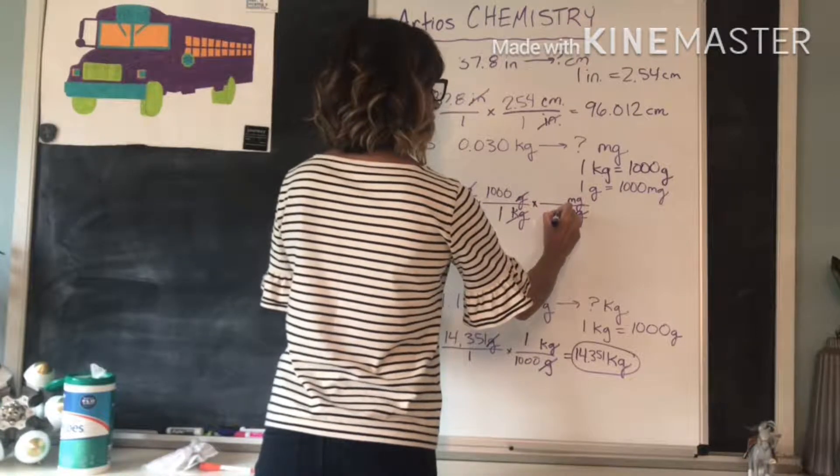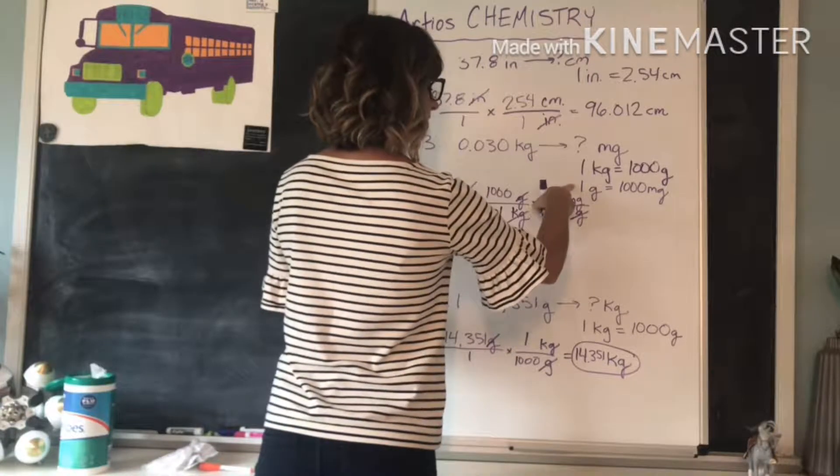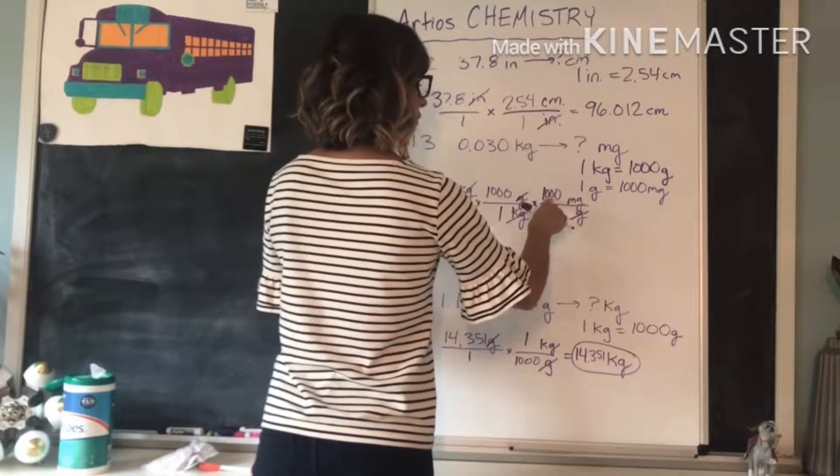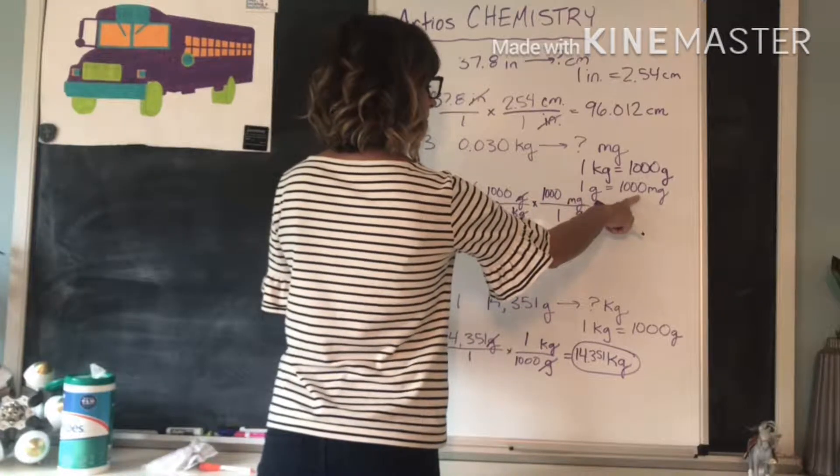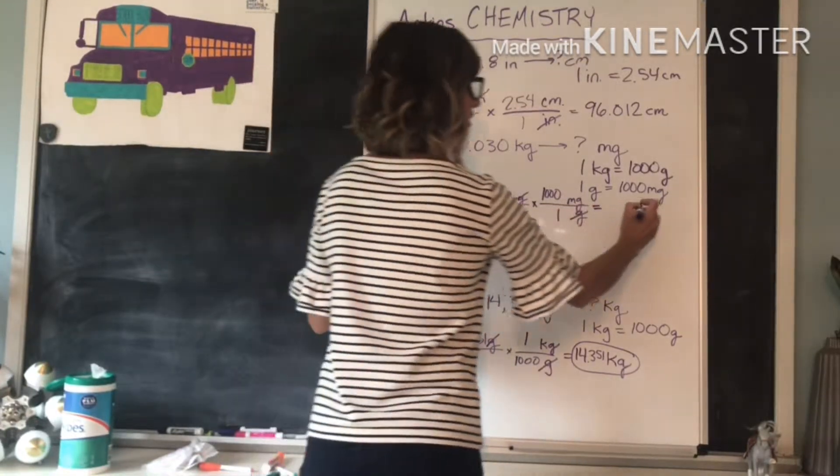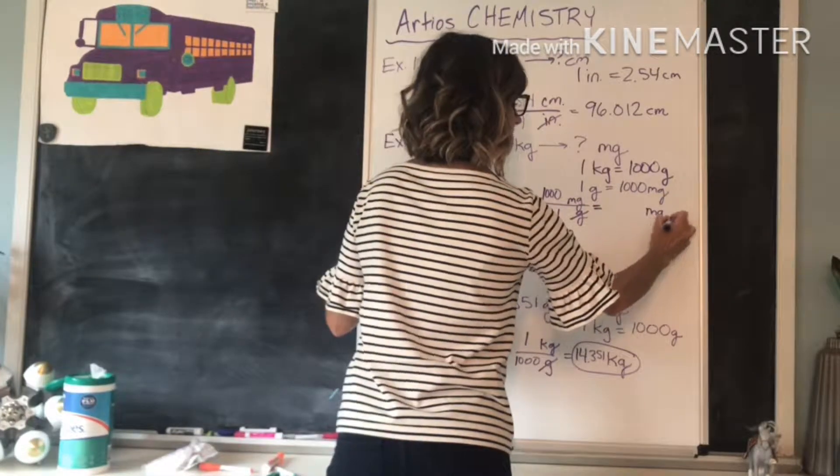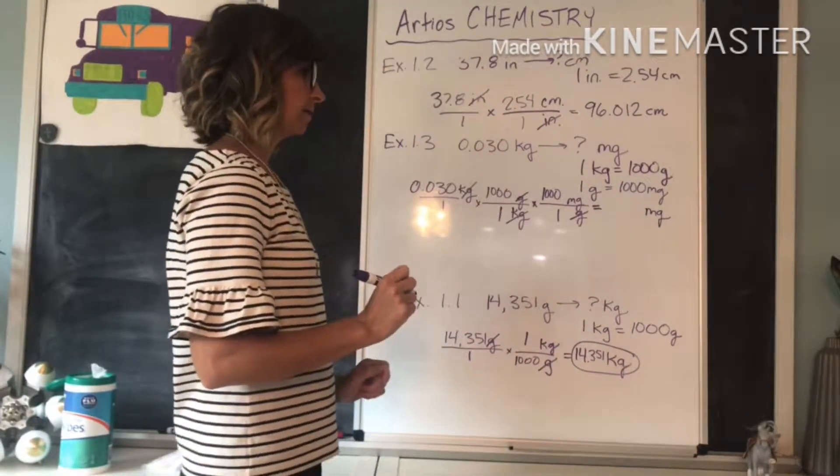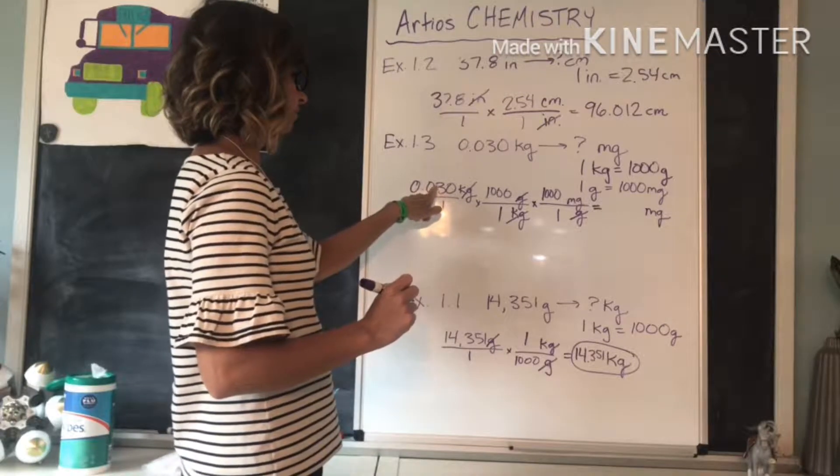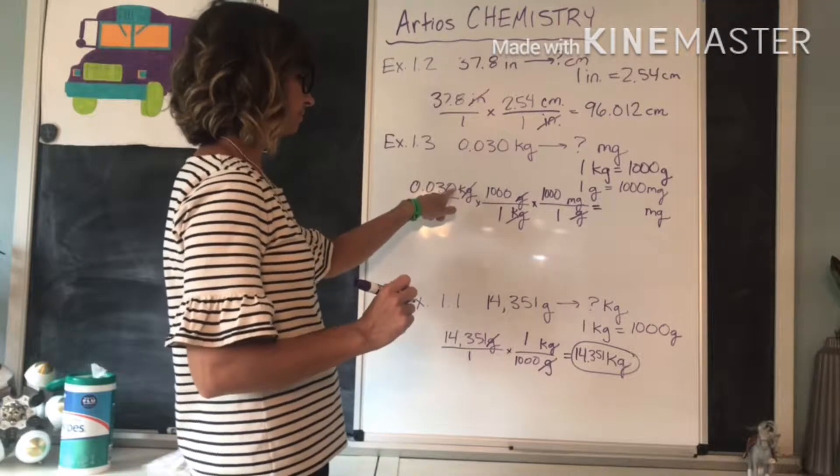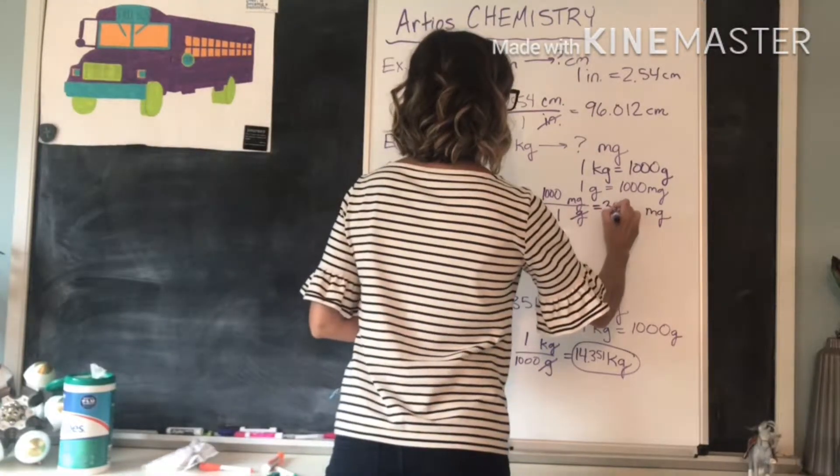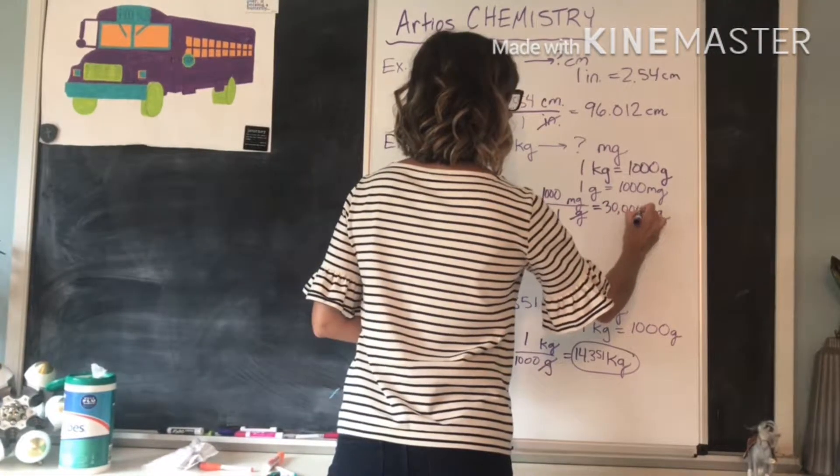So we have one gram on the bottom from this equality right here, 1,000 milligrams on the top. So after our units are canceling out, our units will end up in milligrams, and we can multiply the numbers. So this would end up being, if we just move the decimal place over times 1,000, and then times 1,000 again, 30,000 milligrams.